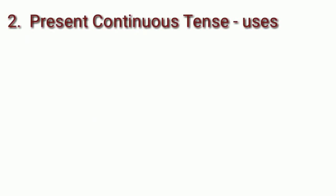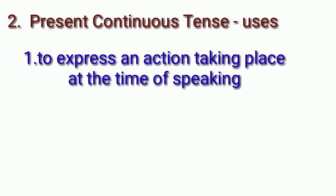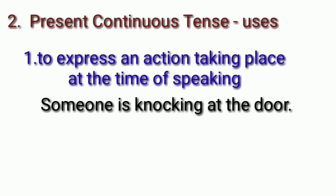Now moving on to present continuous tense. The second sentence in your textbook is 'She is working on a new connection right now.' The first use of present continuous tense is to express an action taking place at the time of speaking. For example, 'Someone is knocking at the door' — the action of knocking is happening right now, at the time of speaking.